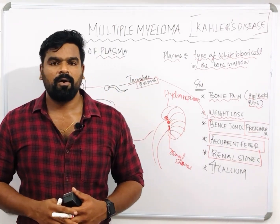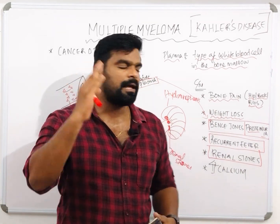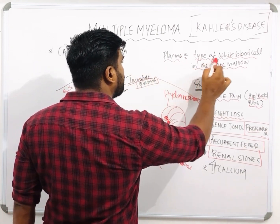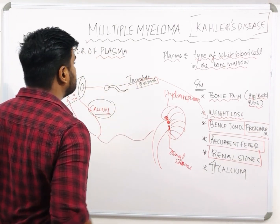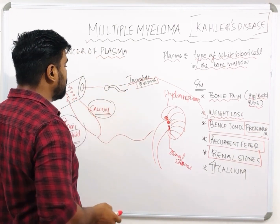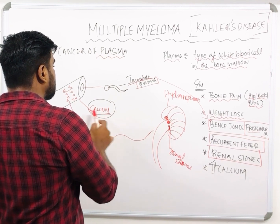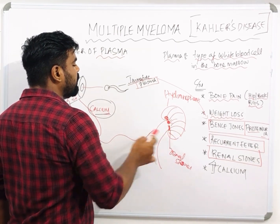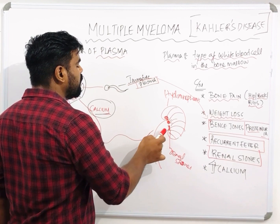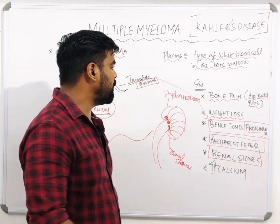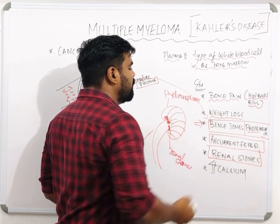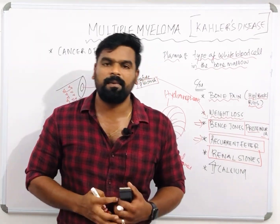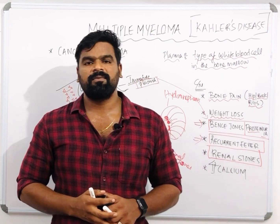To summarize: multiple myeloma is the cancer of plasma, a type of white blood cell in the bone marrow. Immature plasma destroys the bones, and calcium and uric acid released into the bloodstream can lead to renal stone formation, hydronephrosis, and kidney failure. The most classical features to remember are Bence-Jones proteinuria, recurrent infection, and low immunity. That's all about multiple myeloma — see you all with another video. Thank you.